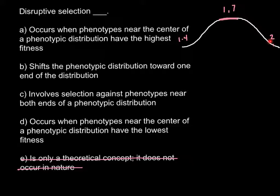Let's return to our answer. Answer A occurs when phenotypes near the center of the phenotypic distribution have the highest fitness. In this model, using plants as an example, we would lose the extreme phenotypes and therefore lose those genotypes as well. The new model would look like what I draw in pink — a narrower, taller distribution.